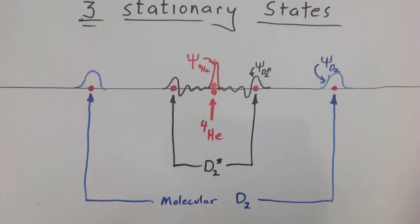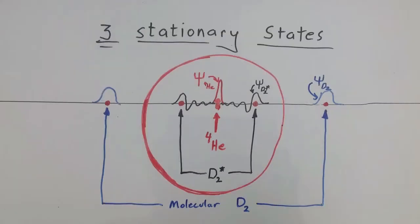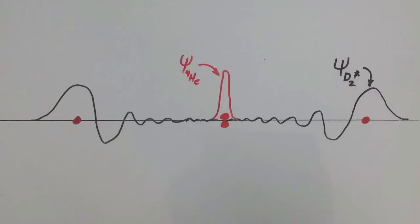Recall last time we drew a cartoon of the three wave functions: molecular D2, the intermediate D2 star, and the product helium-4. We will ignore the molecular D2 to D2 star transition for now and concentrate on the more interesting transition involving the nuclear state of helium-4 interacting with the intermediate state, as drawn here.